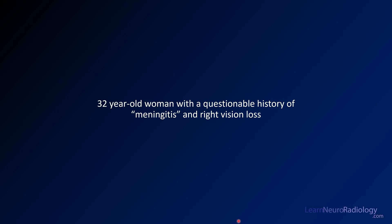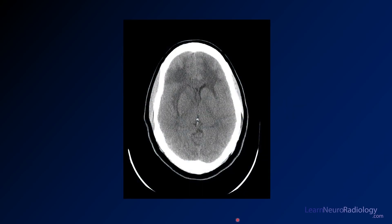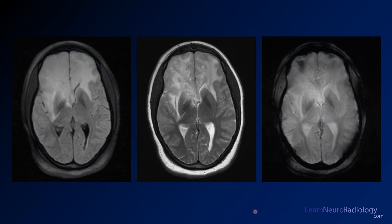The second case is a 32-year-old woman with a questionable history of meningitis at an outside hospital, now presenting with right-sided vision loss. The CT above the orbits is clearly not normal — there's edema in the white matter of the frontal lobes and probably the genu of the corpus callosum. On MR through that same region, it's markedly abnormal.